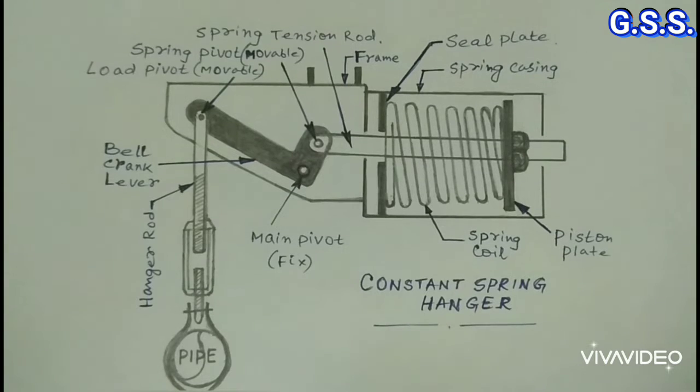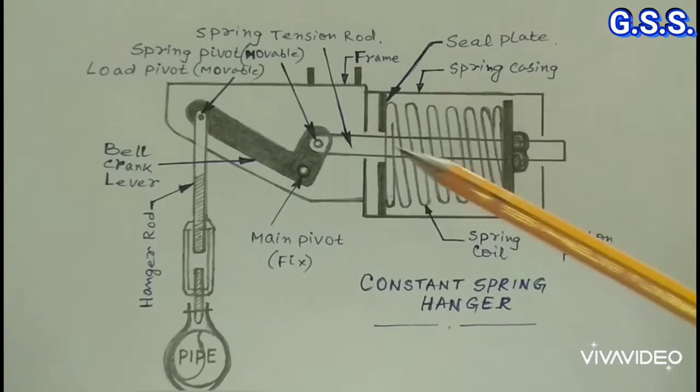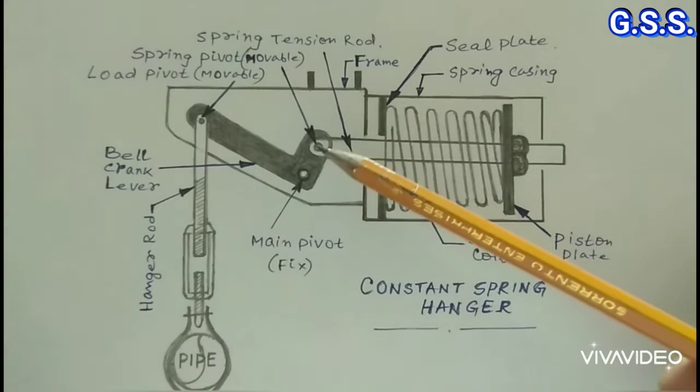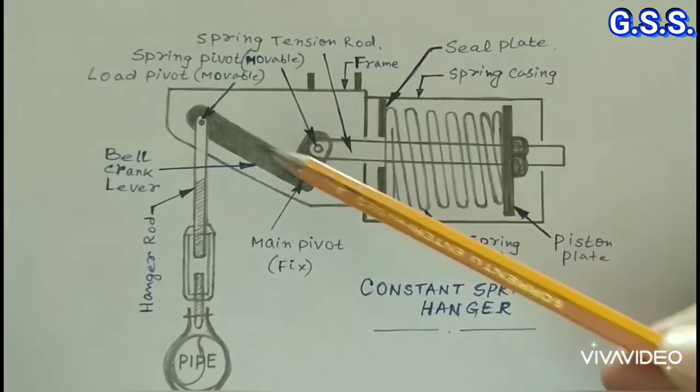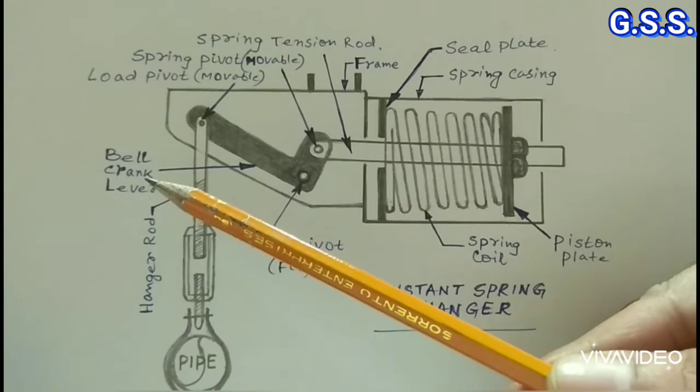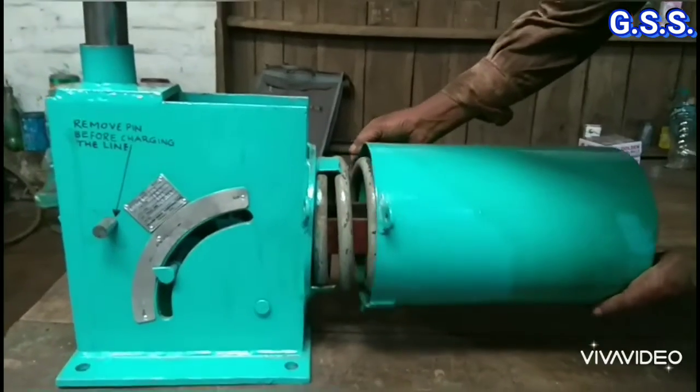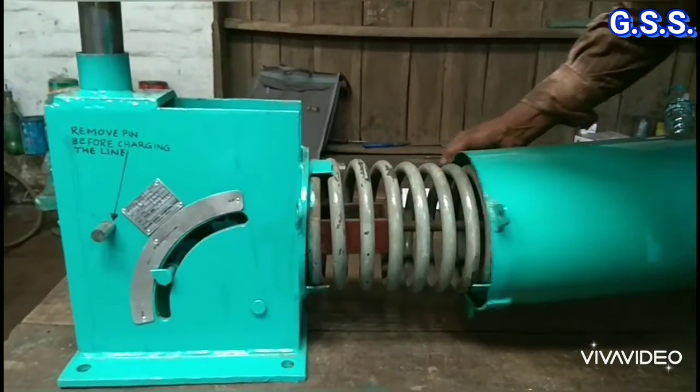Like variable spring support, the spring is kept compressed by the piston plate, and the spring tension rod is connected to a lever called the bell crank lever. You can see the compressed spring and spring tension rod after opening the spring casing.